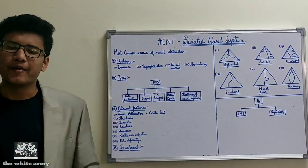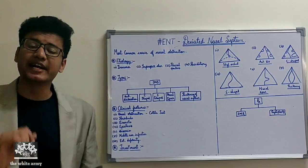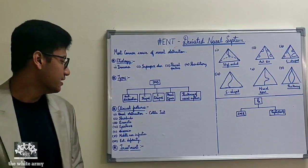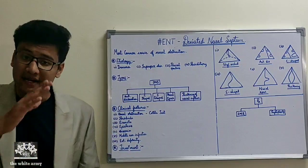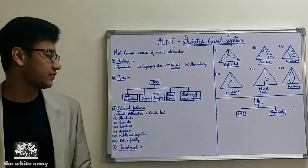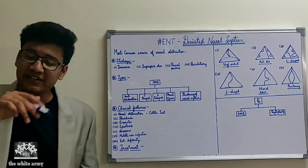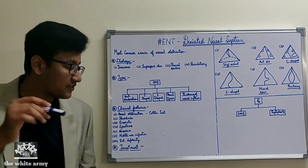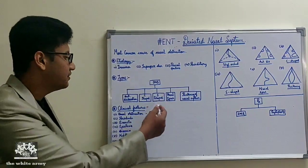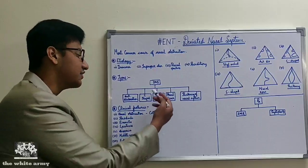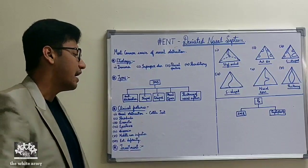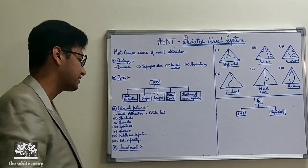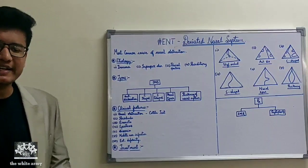There are mainly five types of deviated nasal septum: anterior dislocation, C-shaped deflection, S-shaped deflection, nasal spur, and thickening of the nasal septum.